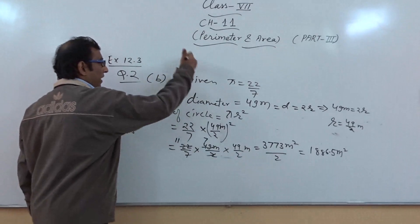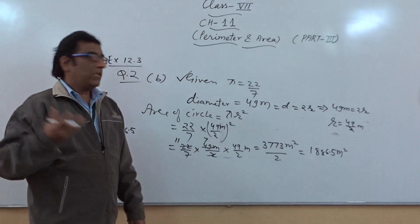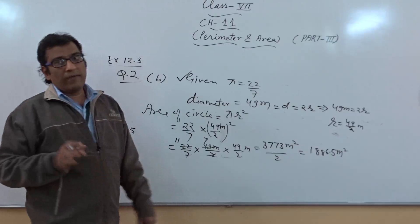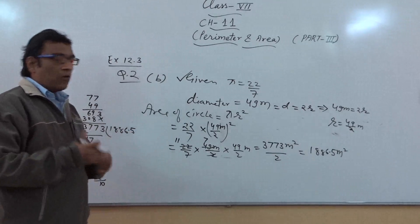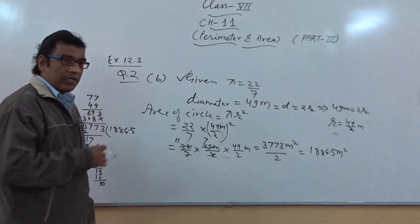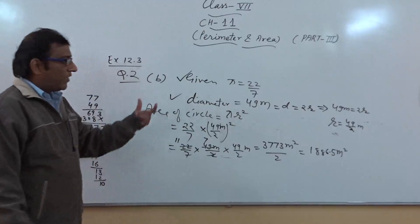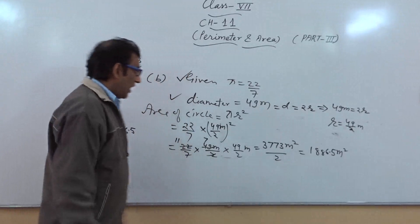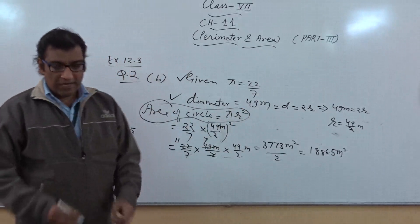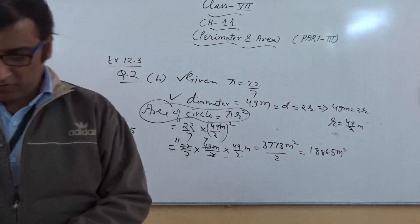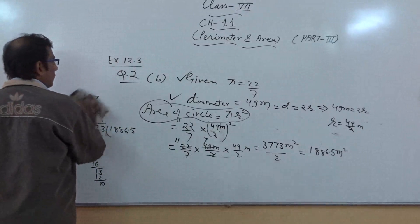Sometimes the value of pi is not given; at that time we will use either 22/7 or 3.14 as per our convenience. But for calculation purposes it is better to go with 22/7. Since diameter was given as 49 metres, we easily calculated the value of radius, then applied the formula for area of circle and put the values.